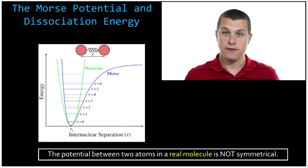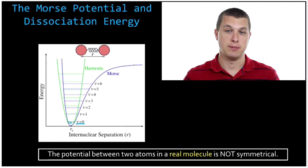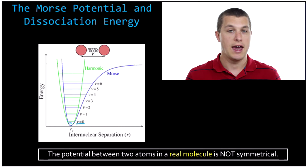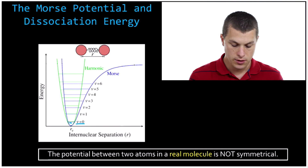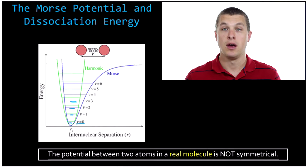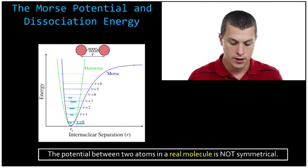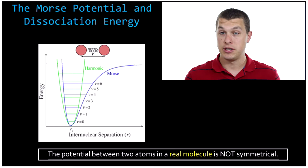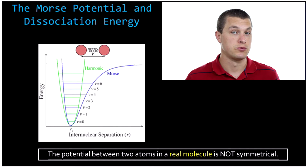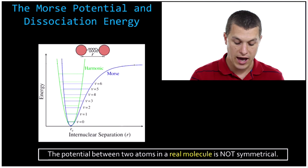For the lower energy states — for example the zeroth state — the green and blue lines match up pretty closely. At low energies, the Morse potential and the harmonic oscillator potential are pretty much identical. The first state, they're shifted a little more; the second state, even more; and the third state, you can see they're pretty different. So when you're thinking about higher vibrational states in particular, the Morse potential is really important. You need to use that more realistic potential to accurately predict the way atoms are going to behave.